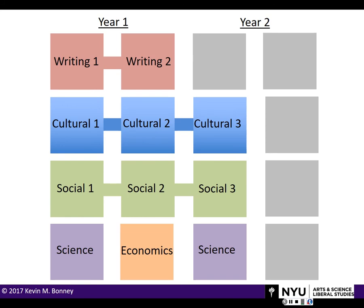This is a typical schedule for our students in their first two years. All students take writing in their first year — a two-course sequence. They take cultural foundations, which is essentially arts, literature, and culture, and social foundations, which is philosophy and political science — each a three-course sequence. We try to get all of our students to take two science courses, and we offer four different science courses. I teach one of them, mostly called life science — essentially biology.